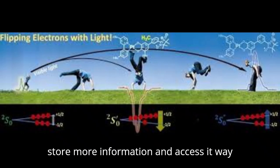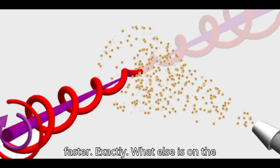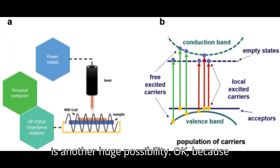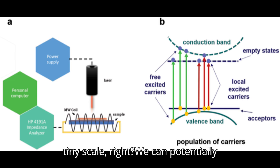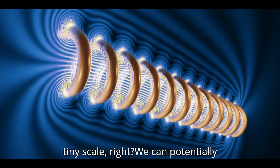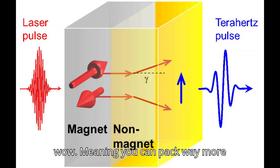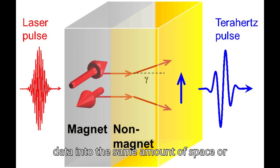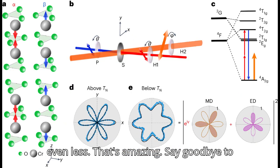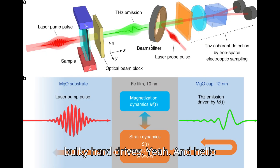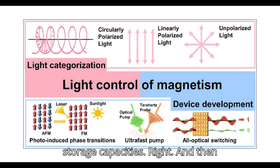So we could store more information and access it way faster. Exactly. Increasing storage density is another huge possibility. Because we're controlling magnetism at such a tiny scale, we can potentially create much smaller memory units, meaning you can pack way more data into the same amount of space or even less.